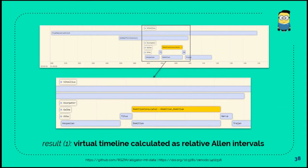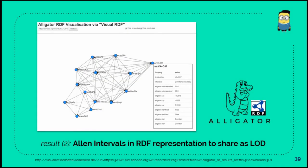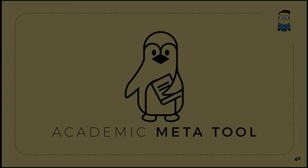In the end, there's some kind of web application where I have, for example, as a result a virtual timeline calculated as relative Allen intervals, or maybe as RDF representation, to do some further research in SPARQL and whatever. That's the link to the data, the first part.